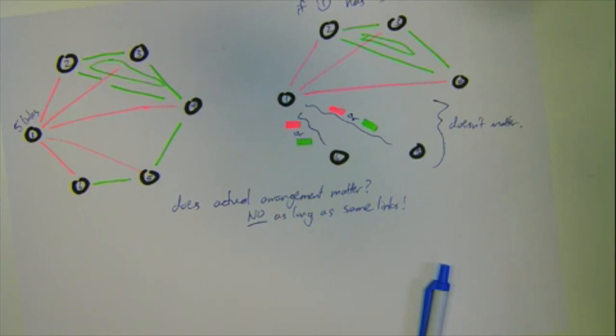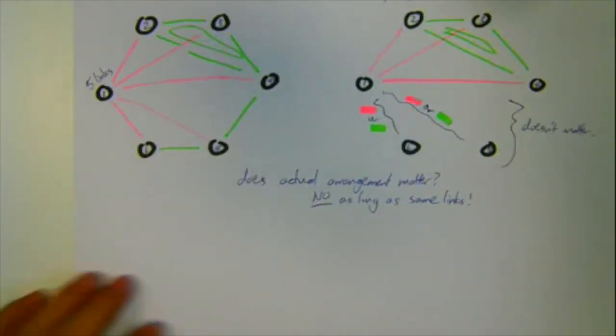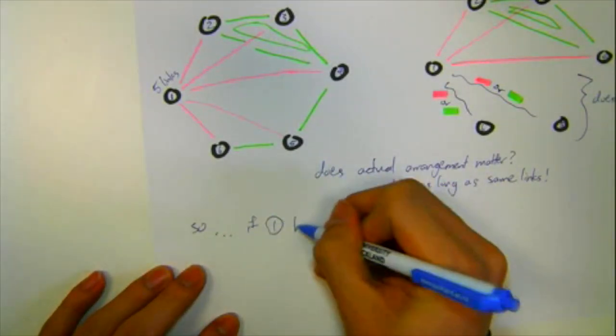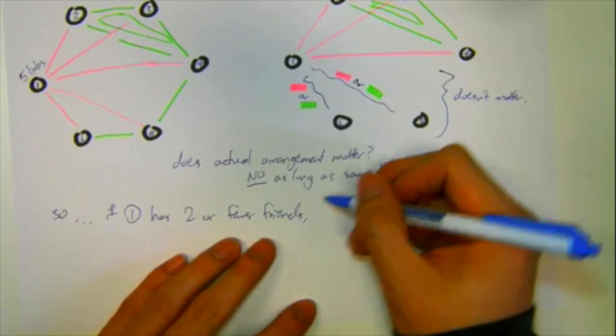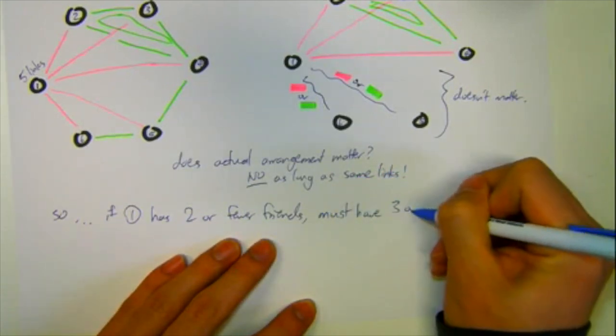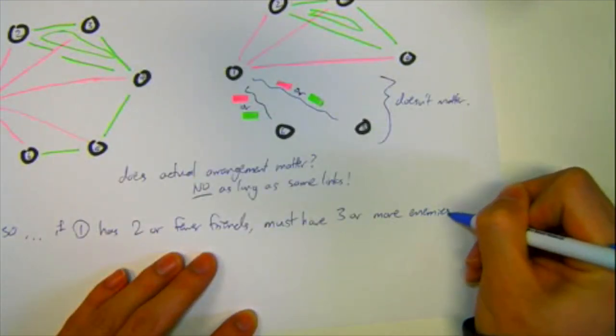Just one last question to ask. What if that person doesn't have 3 or more friends? Well, each person has 5 links, and not having 3 or more friends means having 2 or fewer friends, which means having 3 or more enemies.